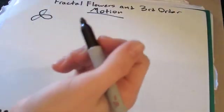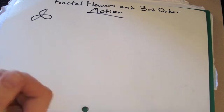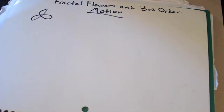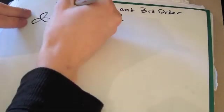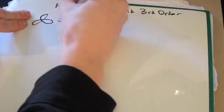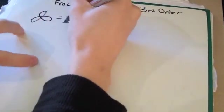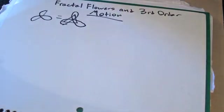Something that is very helpful when trying to do third-order motions is visualizing hand paths of flowers as linear. For instance, we would consider the hand path of a triquetra to be a triangle, because if you were to anti-spin along a triangle, you get a triquetra.